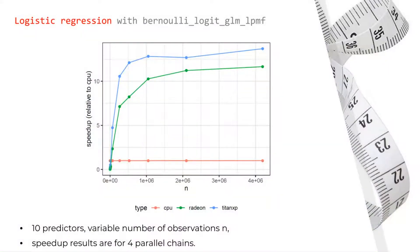These are the results of experiments we did using logistic regression on a toy dataset with 10 predictors and an increasing number of observations. The red and blue lines show the speed-ups for two different GPUs, compared to using only the CPU. We can see that we get 10-fold speed-ups even with only 10 predictors and hundreds of thousands of observations.